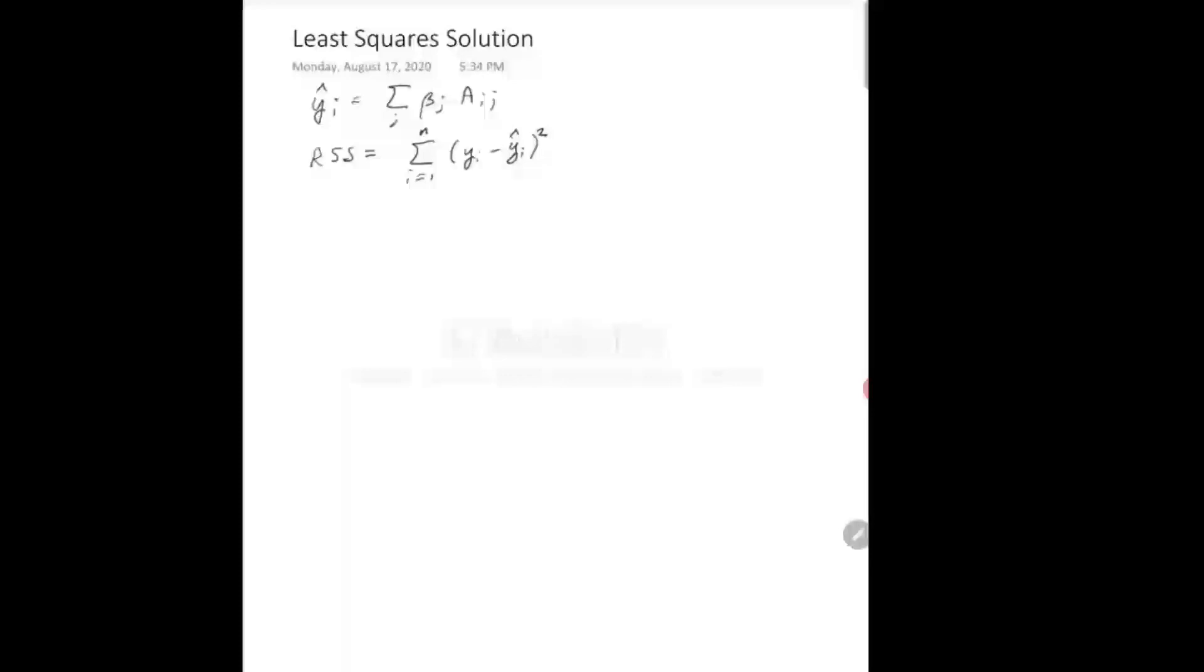Now, what we want to do to minimize the RSS is that we want to minimize this with respect to the parameters. So we want to take the partial derivative of the residual sum of squares with respect to each parameter beta j.